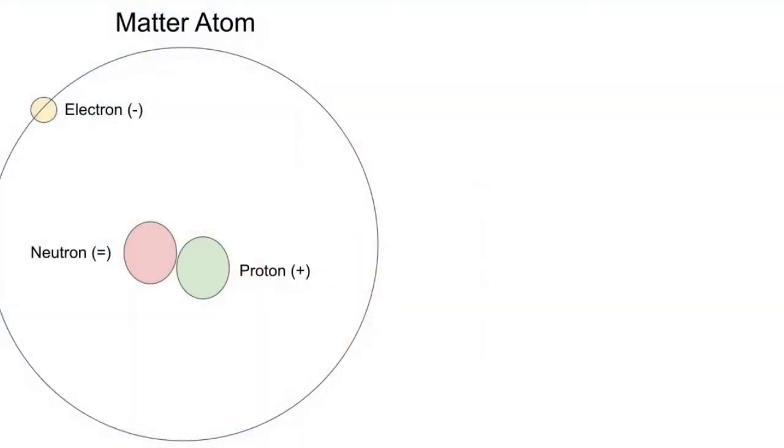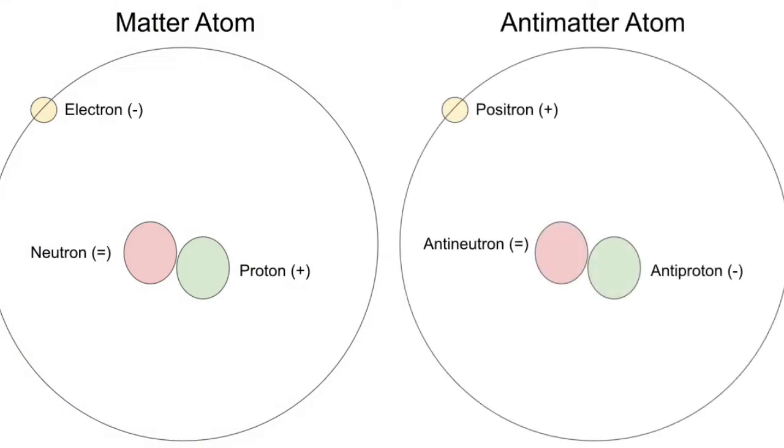Each normal matter atom has neutrons, protons, and electrons. The electrical charges of these balance out to make a neutral charge overall, which keeps the atom stable. Antimatter atoms have antineutrons, which have neutral charge, antiprotons, which have negative charge, and positrons, which have positive charge.